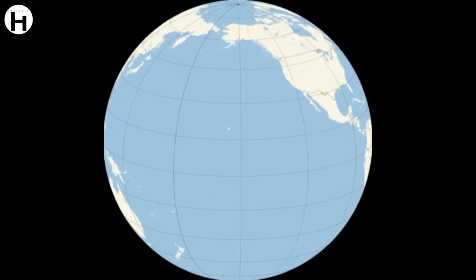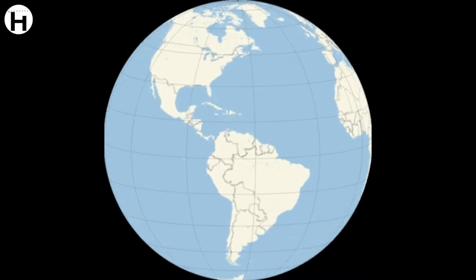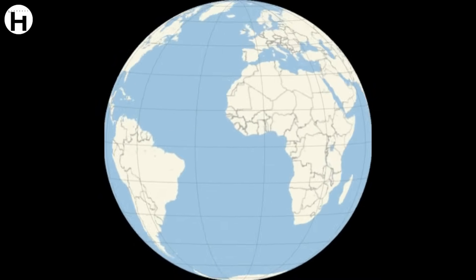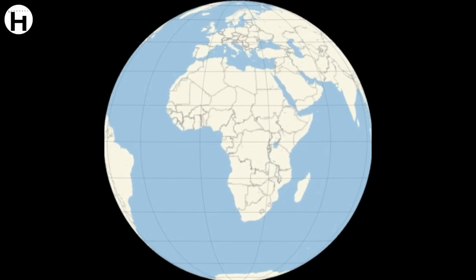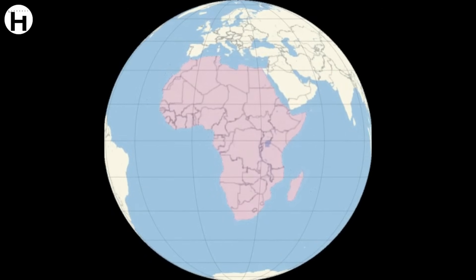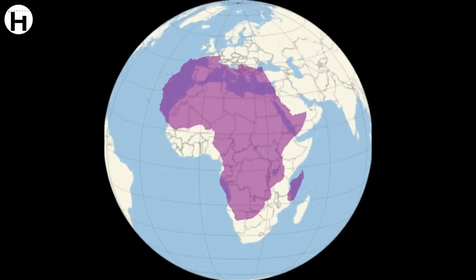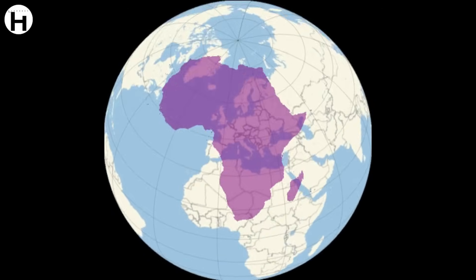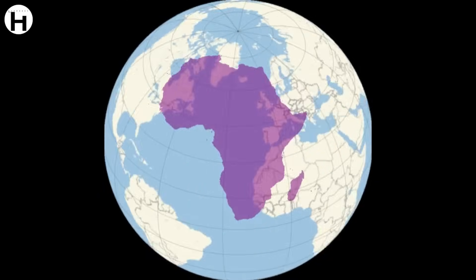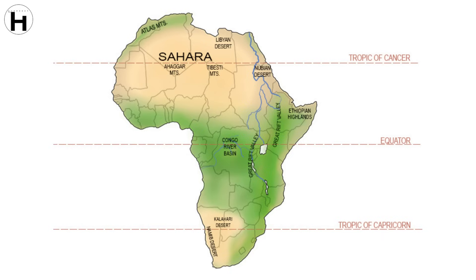The African continent is the second largest after Asia and about nine times the size of India. It is called the Dark Continent. The equator, the tropics of Cancer and Capricorn, and the Prime Meridian pass through the continent.